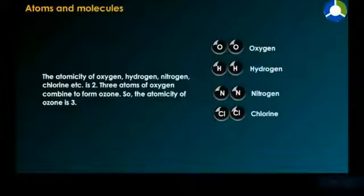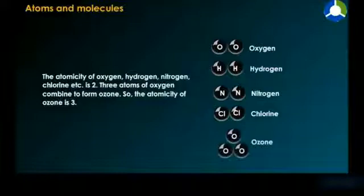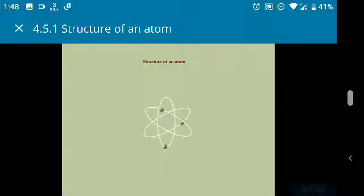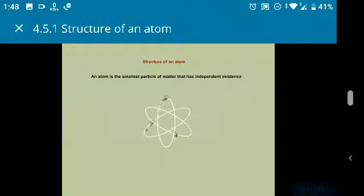Three atoms of oxygen combine to form ozone. So the atomicity of ozone is three. An atom is the smallest particle of matter that has independent existence. It is too small to be viewed, even under a powerful microscope.